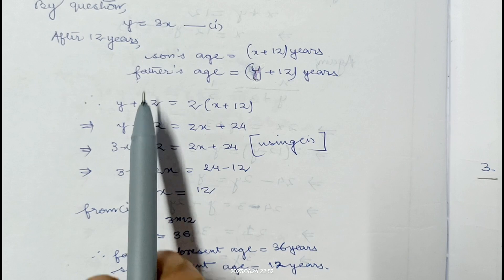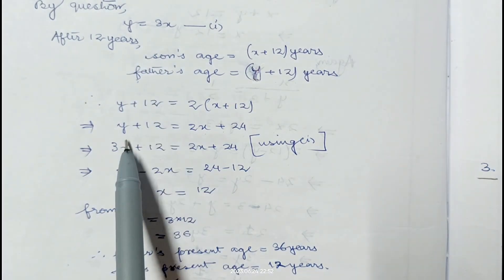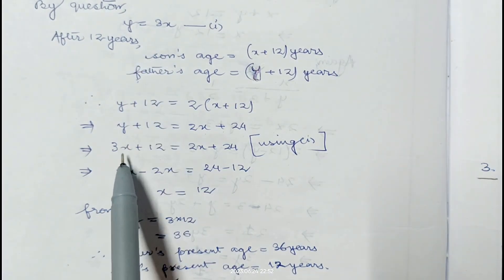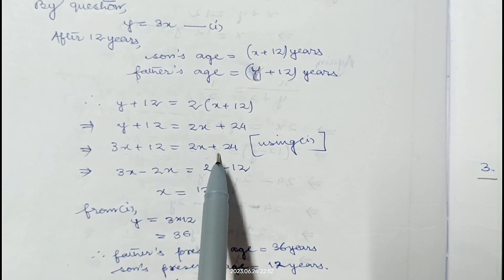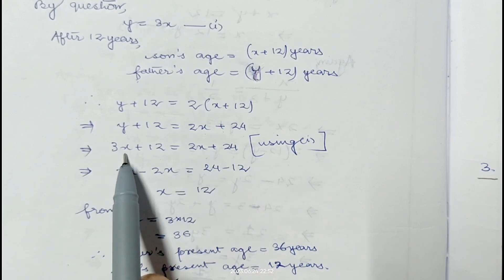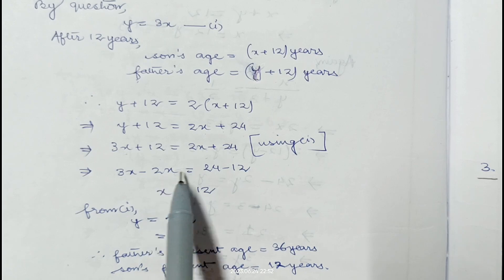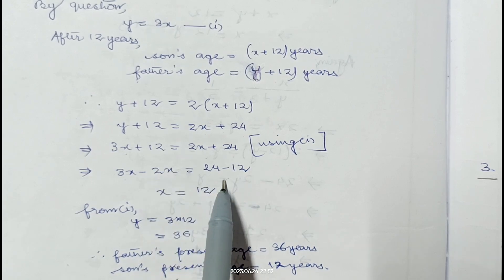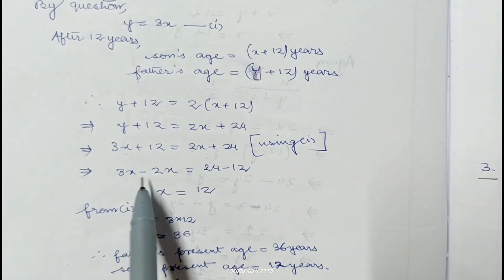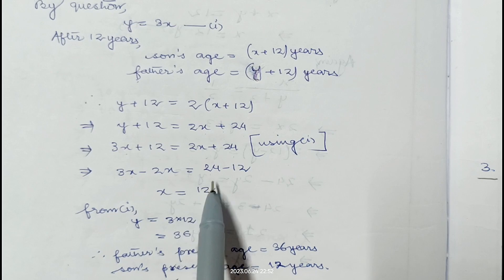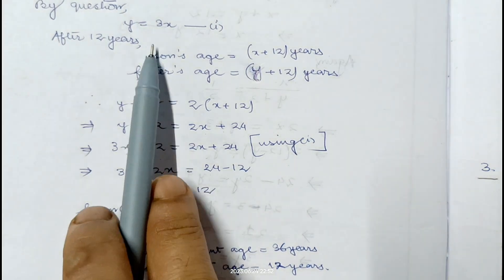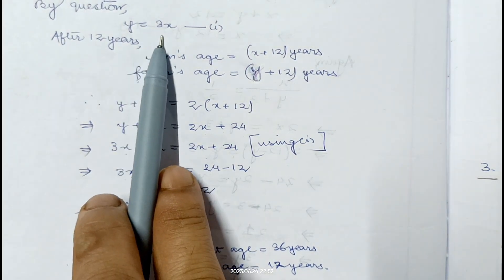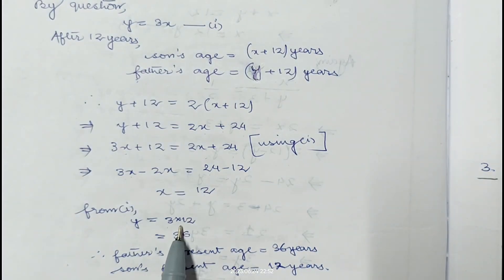From equation 1 we know y equals 3x, so instead of y we write 3x plus 12 equals 2x plus 24. So 3x minus 2x equals 24 minus 12. 3x minus 2x gives x, so x equals 12. Now replacing x in the first equation, y will be 3 into 12, which is 36.